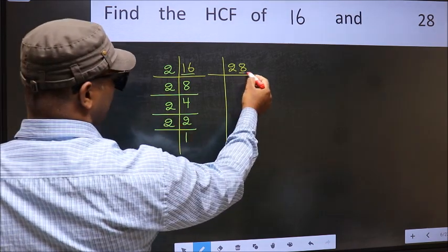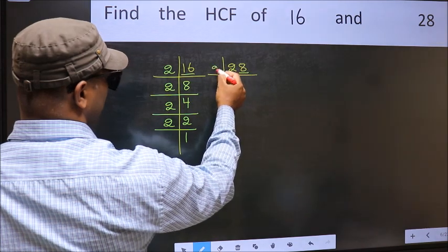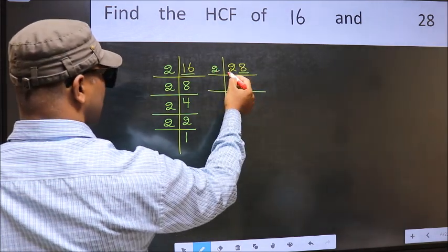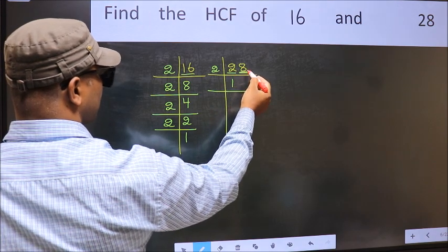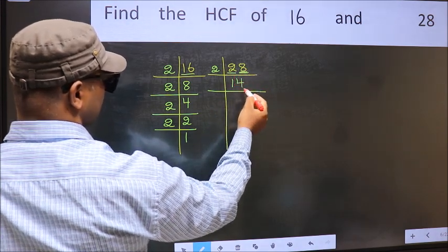Now the other number. Last digit 8, so take 2. First number 2, when do we get 2 in the 2 table? 2 times 1 is 2. The other number 8, when do we get 8 in the 2 table? 2 times 4 is 8.